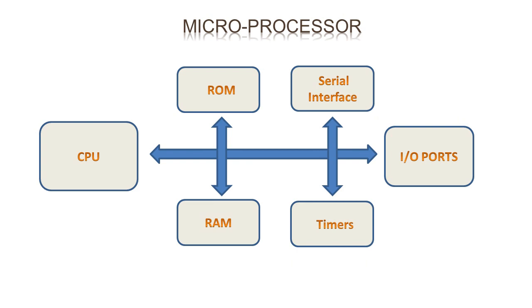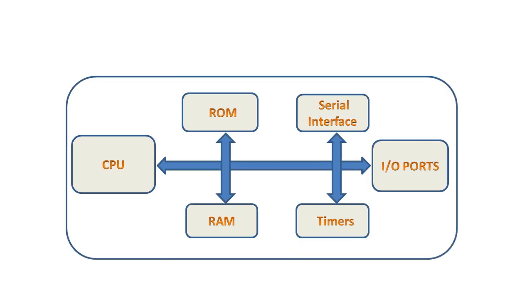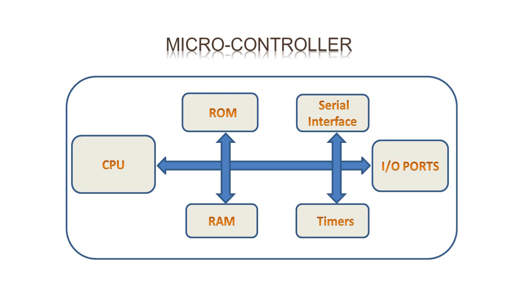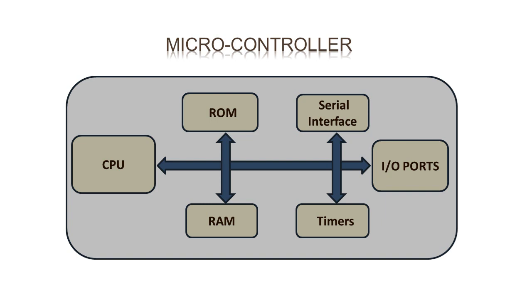In the case of a microcontroller, as they are used for specific tasks, the amount of memory and IO ports required is limited. All memory elements and IO ports are integrated along with the CPU inside a single chip, making the overall system much smaller. In a microprocessor, since all memory elements and IO ports are connected externally, the overall size of the system is larger than that of a microcontroller.